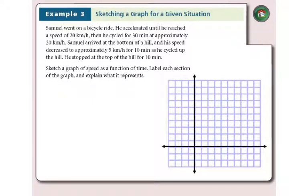So now it's up to us to take a situation and provide a graph that describes it. First of all, we need to look at what type of graph it is. It's a graph of speed as a function of time.